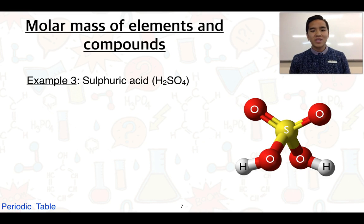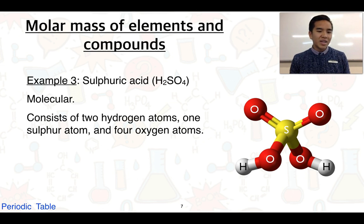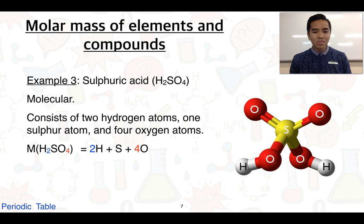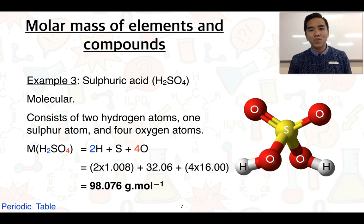Our third example looks at sulfuric acid. Sulfuric acid has the formula H₂SO₄ and is a molecular compound, which tells us the exact number and type of atoms in one molecule. To determine the molar mass, we factor in each different atom: two lots of hydrogen, one sulfur, and four oxygens. Using relative atomic masses — hydrogen at 1.008, sulfur at 32.06, and oxygen at 16.00 — we end up with an answer of 98.076 grams per mole.